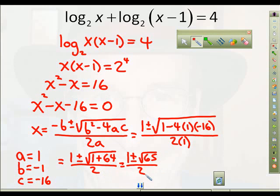And of course, this is going to be 1 plus or minus the square root of 65 all over 2. Now, so that's the solution to this equation right here. x equals 1 plus or minus the square root of 65 all over 2.